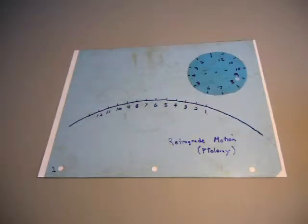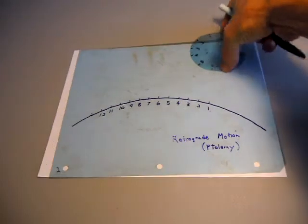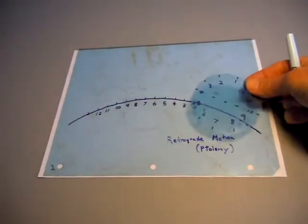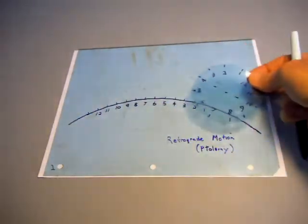Old-school simulation of retrograde motion according to Ptolemy. Ptolemy had the planets going around a small circle, this small piece of plastic, as that small circle traveled along a larger circle.